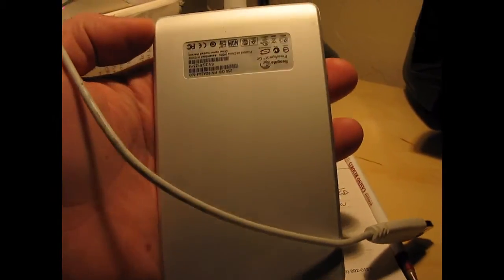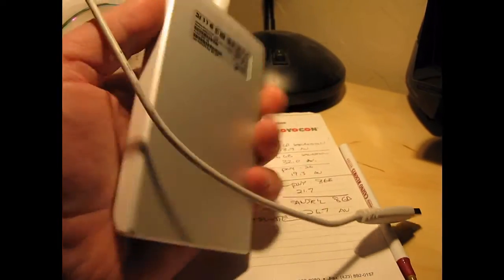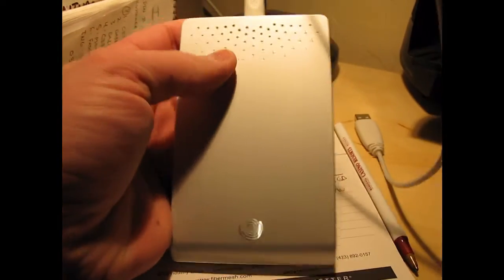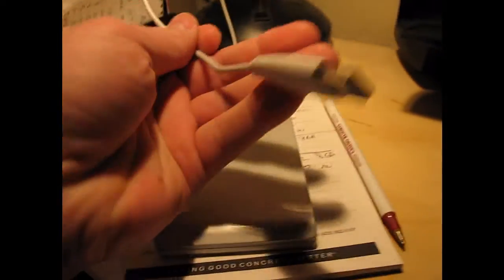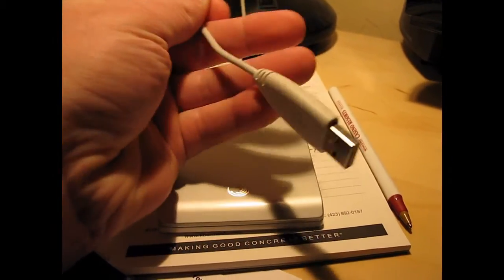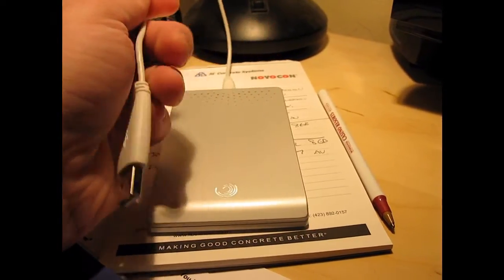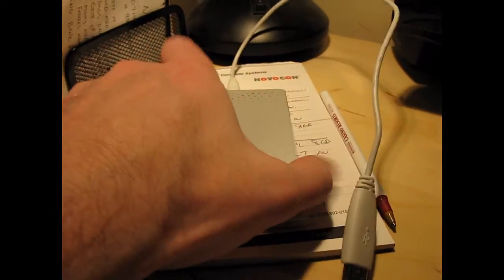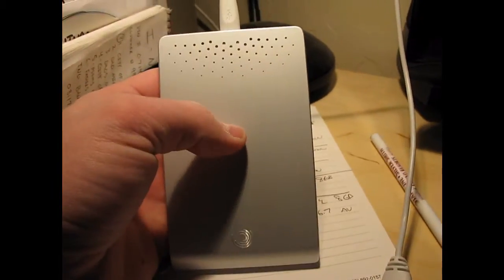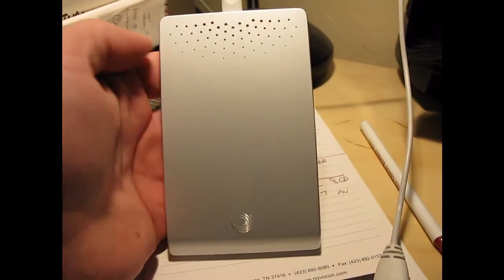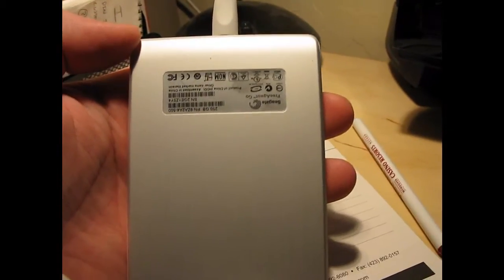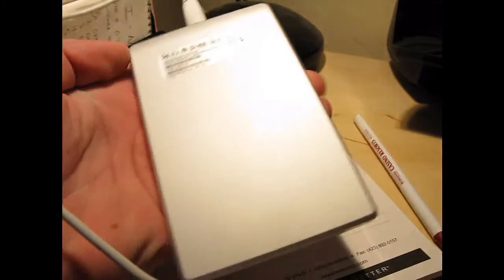So, this right here is a 250GB Seagate external USB drive, it's a 5400RPM drive, I've got a couple of Windows backup images on it, but that's what it is, I'm going to go ahead and test this.